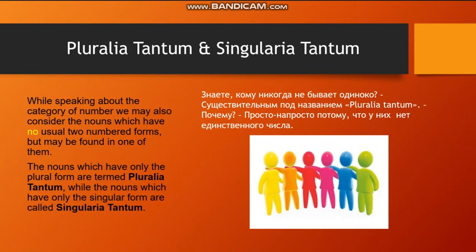While speaking about the category of number, we may also consider the nouns which have no usual two-numbered forms but may be found in only one of them. The nouns which have only the plural form are termed pluralia tantum, while the nouns which have only the singular form are called singularia tantum.